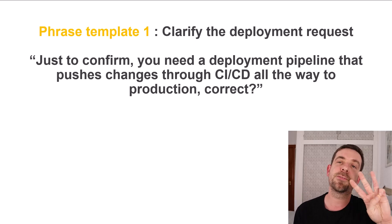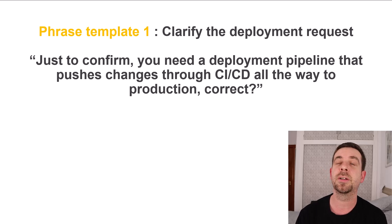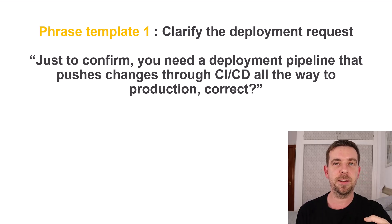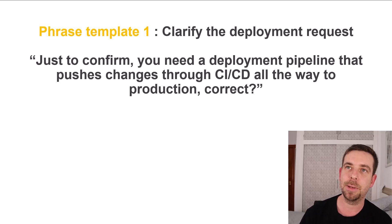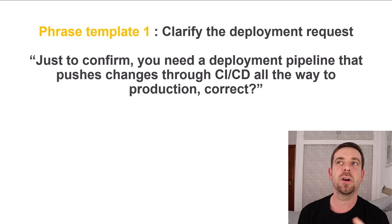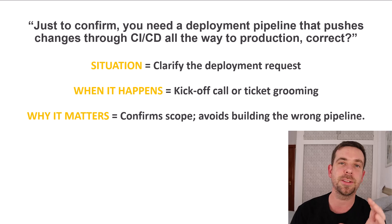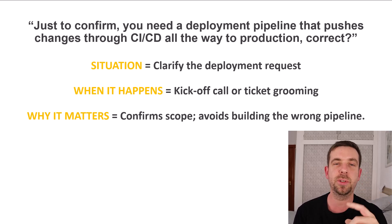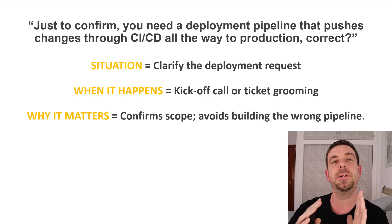As part of this lesson, I want to look at three phrase templates — three phrases with a useful structure we can learn to use in developer meetings. The first phrase: just to confirm, you need a deployment pipeline that pushes changes through CICD all the way to production, correct? The situation is: clarify the deployment request. You use this in a kickoff call or ticket grooming, and it confirms scope and avoids building the wrong pipeline.